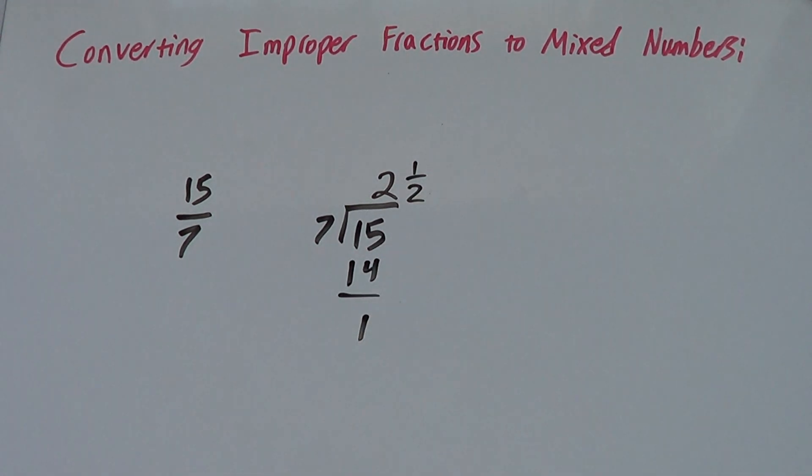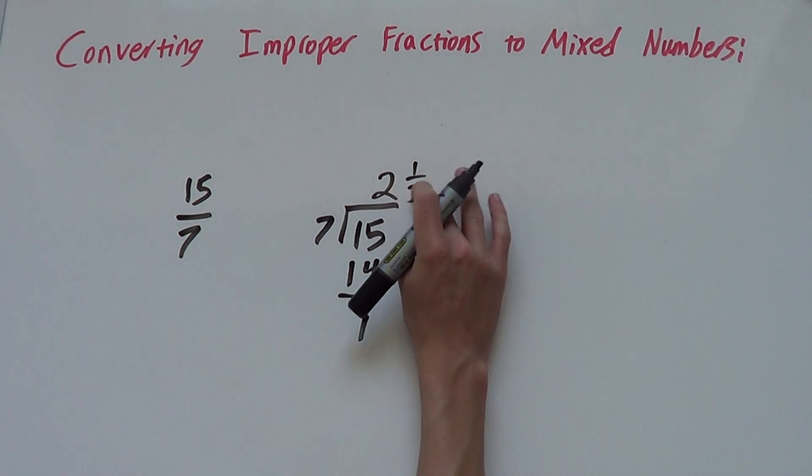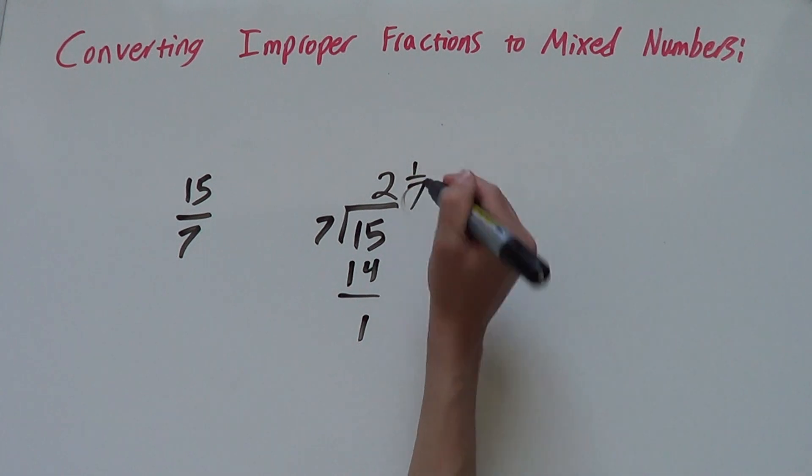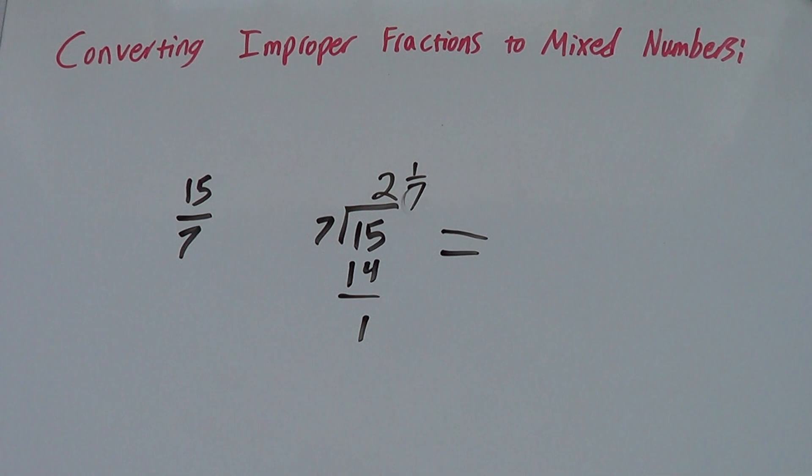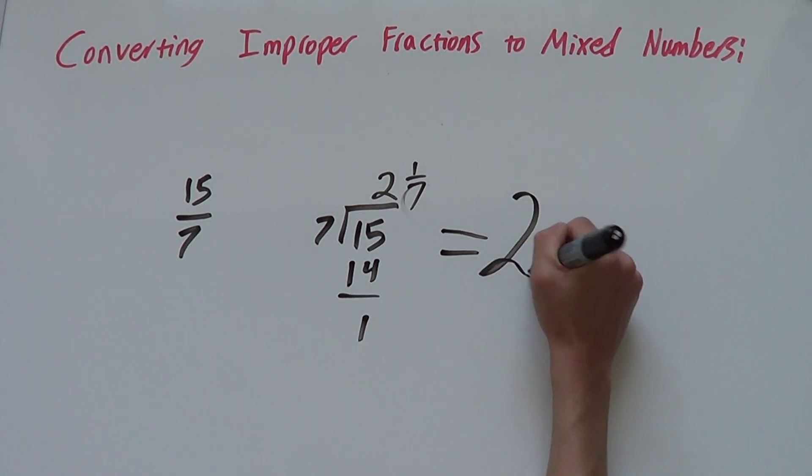So we will have 2 and 1 seventh. So when we make 15 over 7 a mixed number, we will get 2 and 1 seventh.